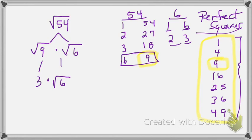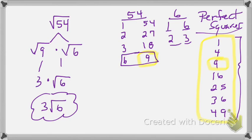So we just bring it down as the square root of 6, and we combine to get 3 times the square root of 6 — that's your answer. So to summarize: first, find the factors of your radicand, then see if one of the factors is a perfect square. If it is, go ahead and break it up.